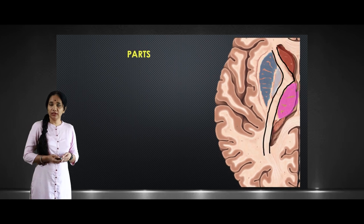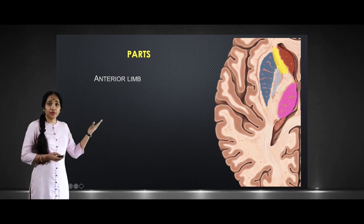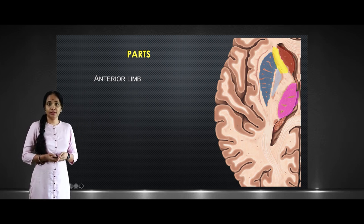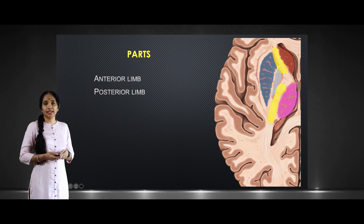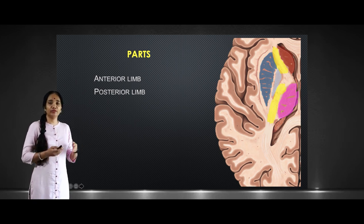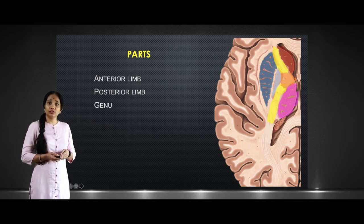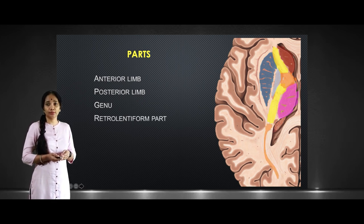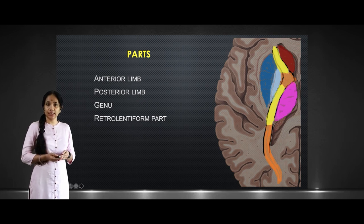Now let us look at the parts of the internal capsule. The anterior limb lies between the head of the caudate nucleus and the lentiform nucleus. The posterior limb is a V-like structure lying between the thalamus medially and the lentiform nucleus laterally. Between the anterior and the posterior limbs is the genu. The posterior limb continues backwards, and this part is called the retrolentiform part.